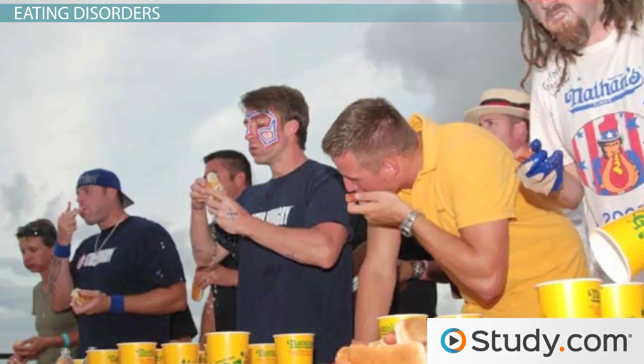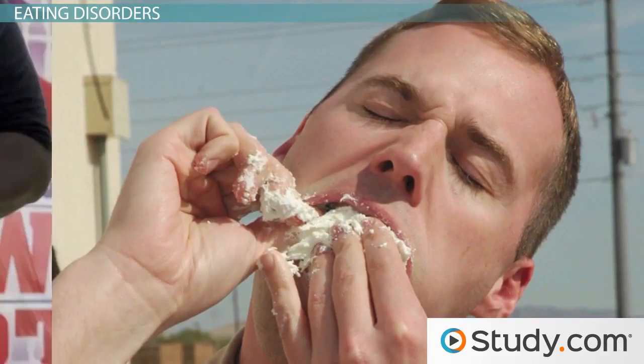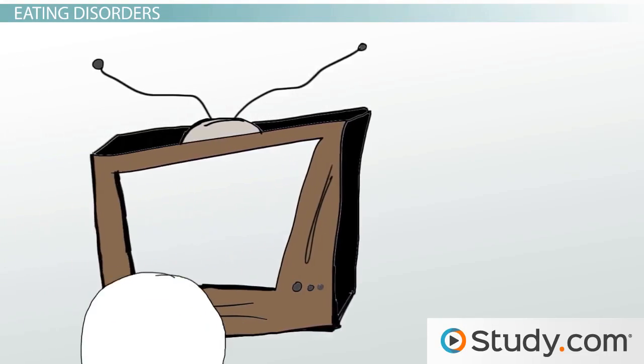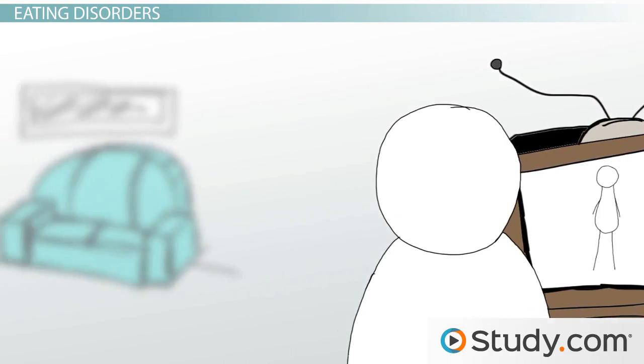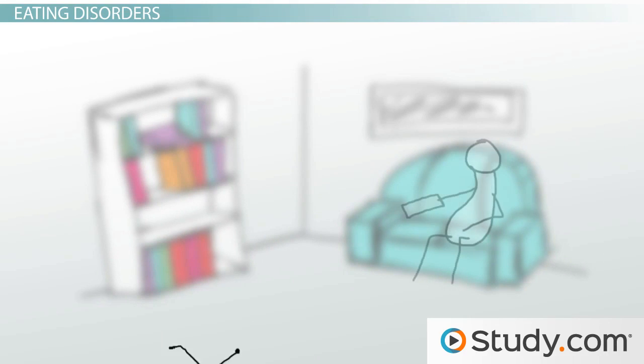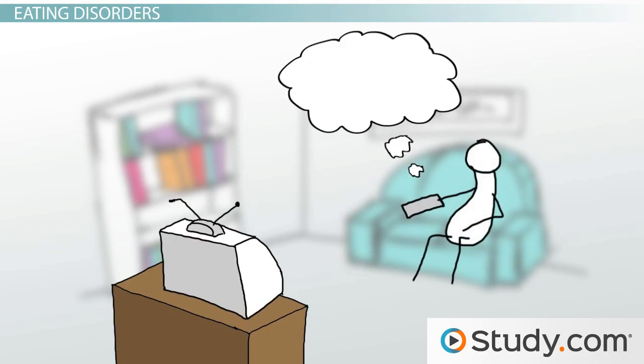Hot dog eating competitions, pie eating competitions, and holidays all have us gorging. Then we watch TV and look at advertisements with people who are extremely fit and whose body fat is in the dangerously low range. This creates a huge tension between us wanting to eat and wanting to be like those we see on TV.